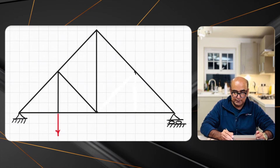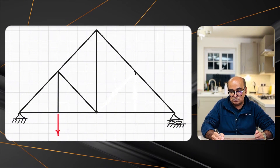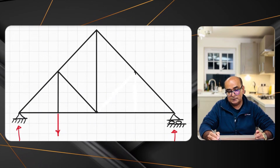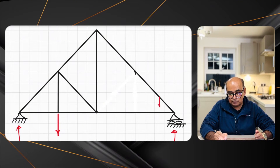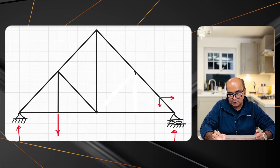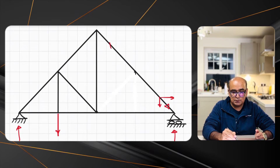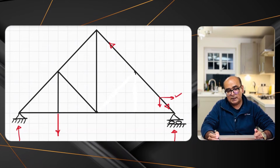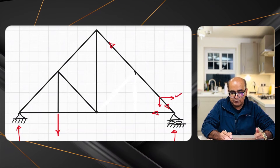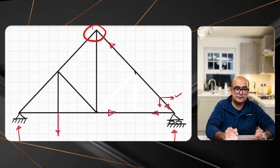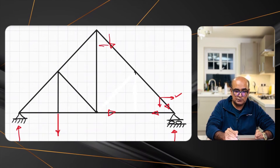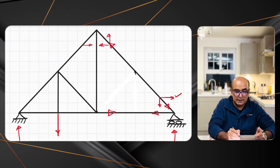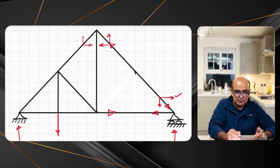Let's find the reactions. We will have upward reactions at both supports. When the reaction on the right is upwards, the vertical component of that member force has to be downwards and rightwards — pointing towards the joint. The horizontal component is therefore on the right side, so the force in the horizontal member points away from the joint to balance it. At this joint, the vertical component is upwards and horizontal is leftwards, so the horizontal component in the next member must be rightwards.